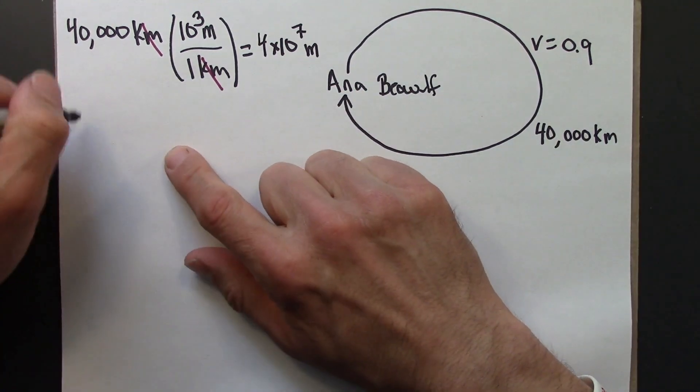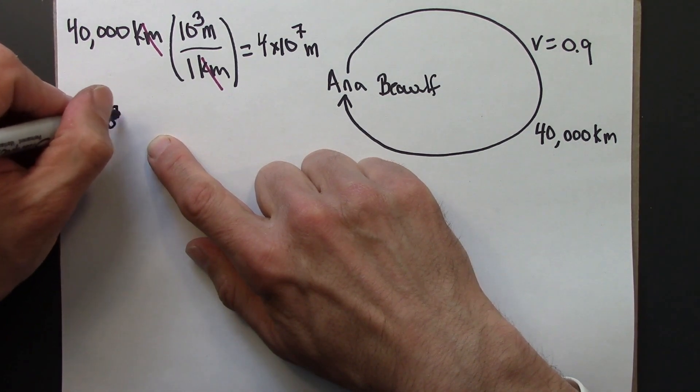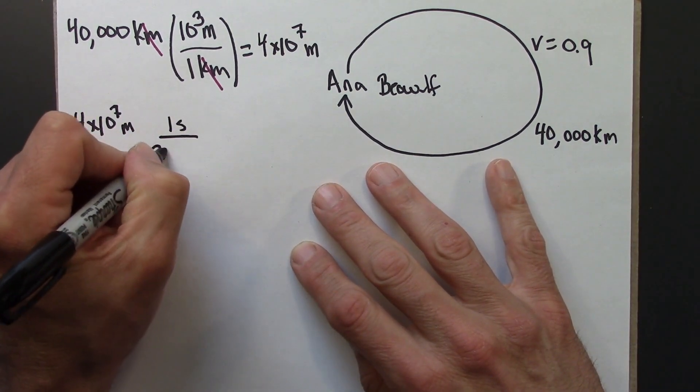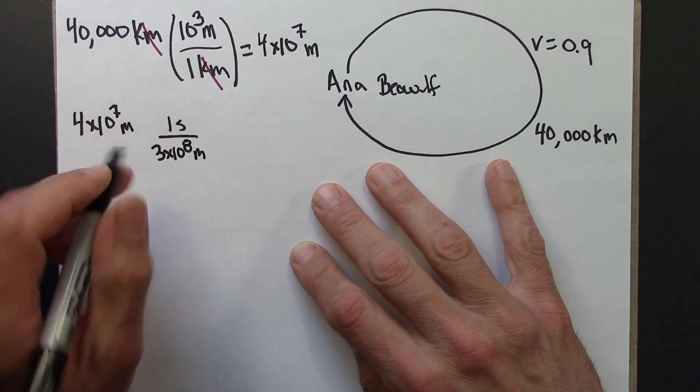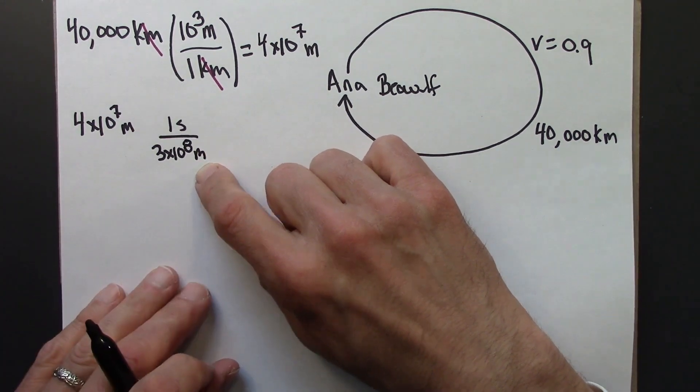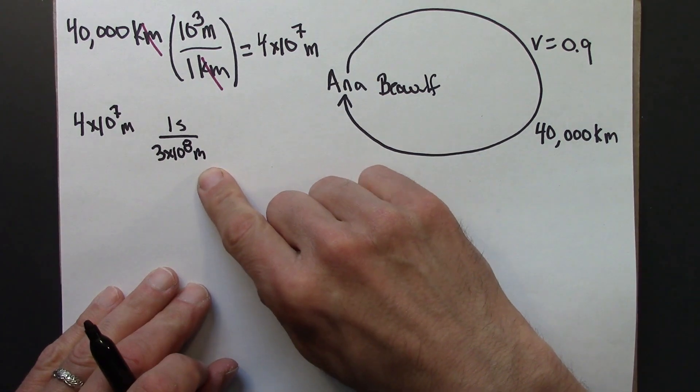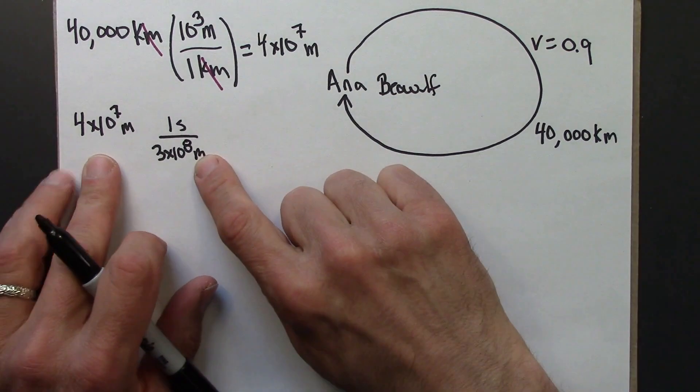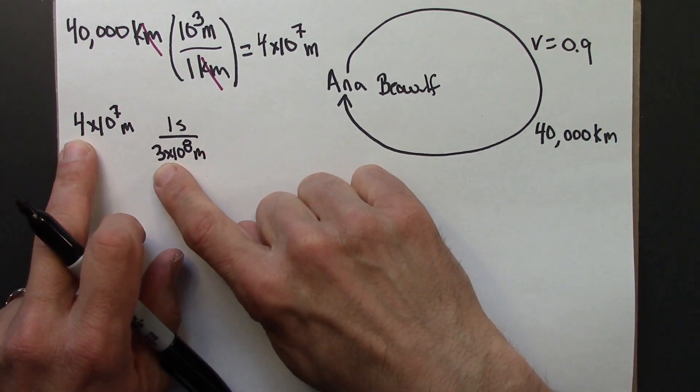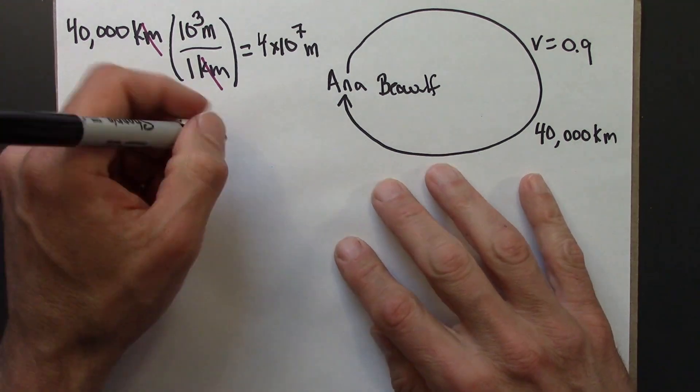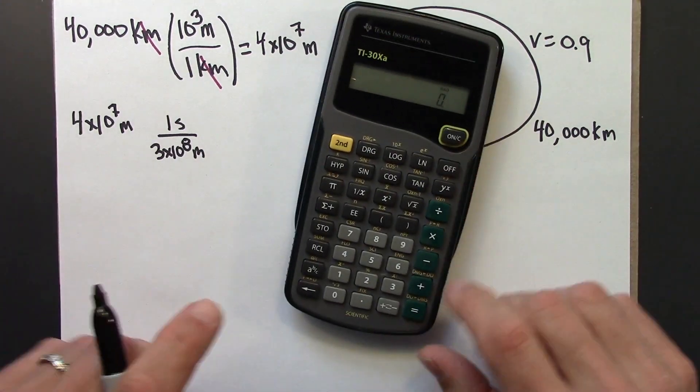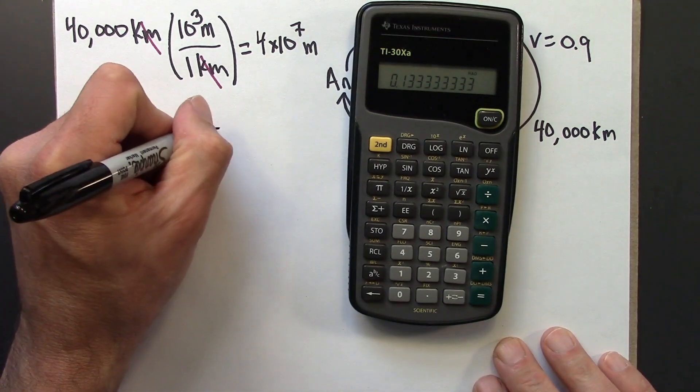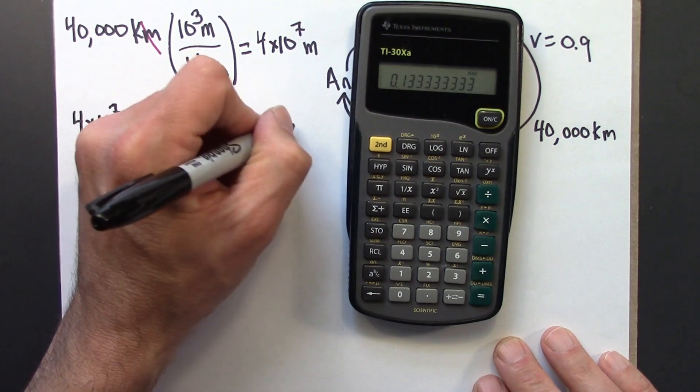Now let's convert meters into seconds. The conversion is the speed of light: 1 light second is 3 times 10 to the 8 meters. So the speed of light is 3 times 10 to the 8 meters per second. Let's do this out, we could do it on a calculator. 7 over 8 is minus 1, 4 over 3 is 1.333, so this is going to be 0.1333. Let's check on a calculator: 0.1333 seconds.